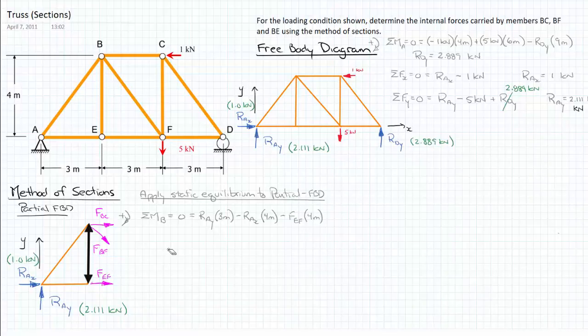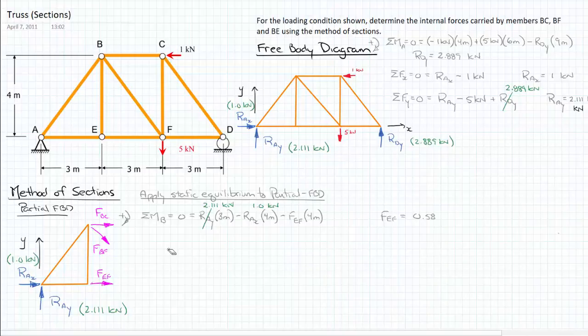Now we'll substitute in for what our known values are. So we know RAY as 2.111 kilonewtons. And we know RAX as 1.0 kilonewtons. And that means we can solve for the force EF is equal to 0.5833 kilonewtons. Now I purposely drew all of my internal forces to show a member in tension, which is to say that the member is pulling on the joint, which is to say the joint is pulling on the member, so I've drawn them in tension. So if I get a positive number, I know it's going to be in tension. In this case, I got a positive number, so I can also identify that that member is in tension.